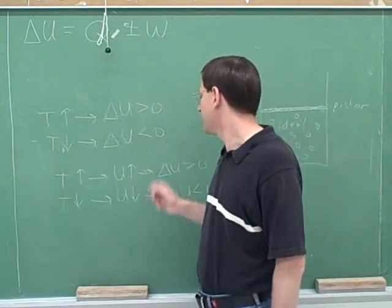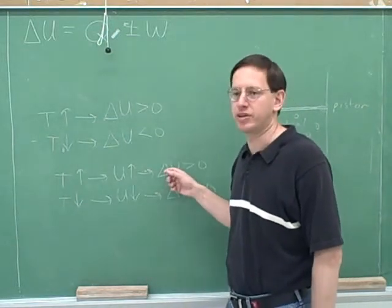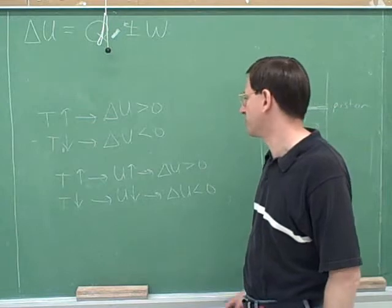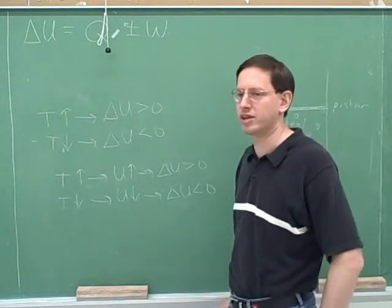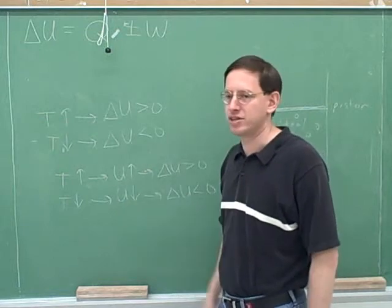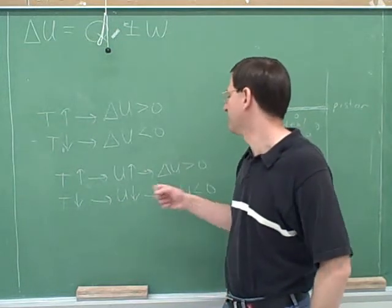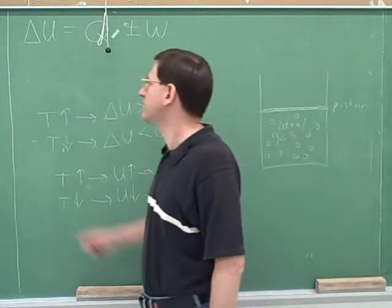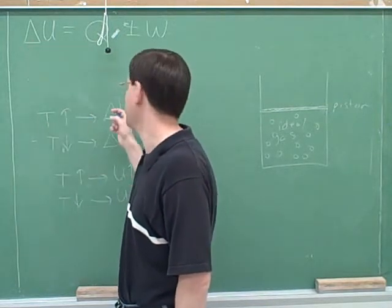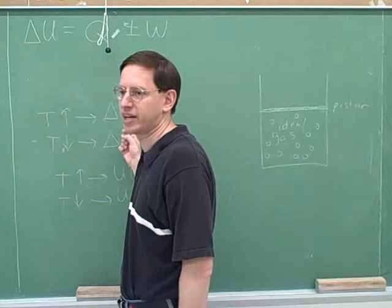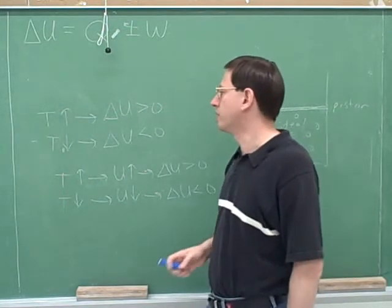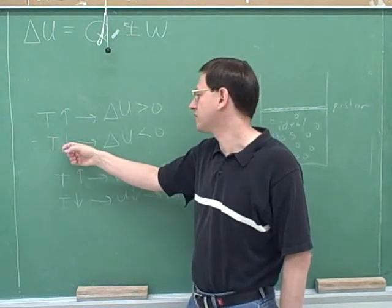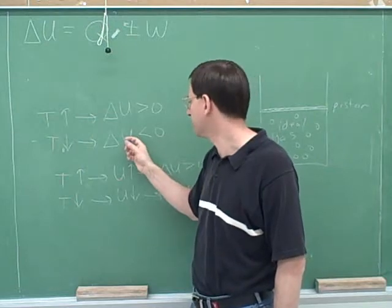The temperature is proportional to the energy — for an ideal gas, the only energy is kinetic energy. Doubling the temperature would double the energy U, but wouldn't double delta U. The basic point is: an increase in T means a positive delta U, and a decrease in T means a negative delta U. The mistake to avoid is saying an increase in T means an increase in delta U — it just means a positive delta U.